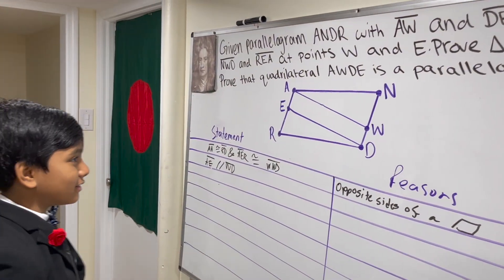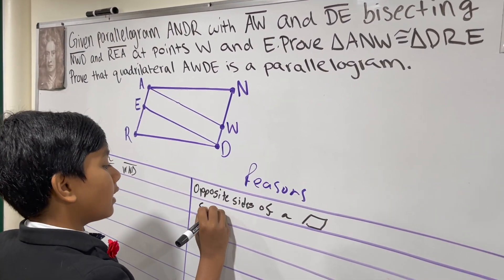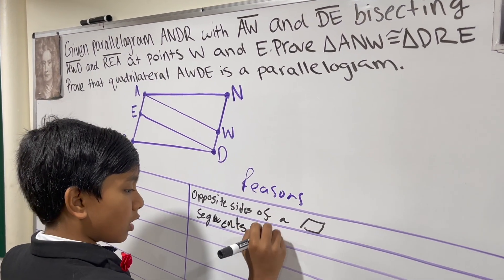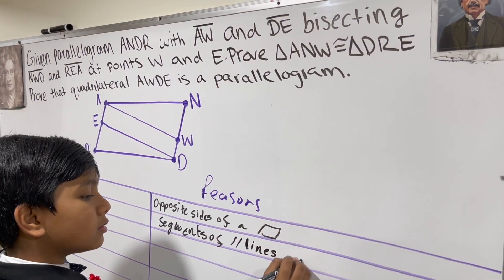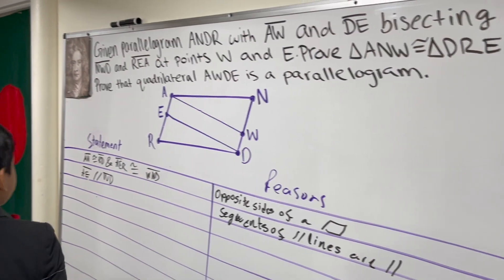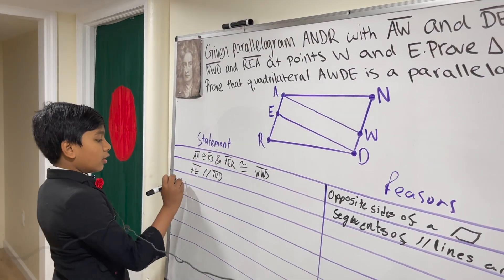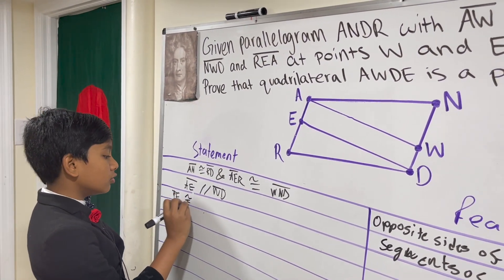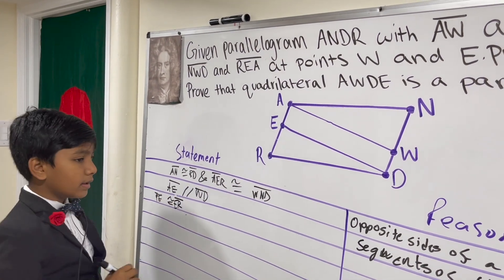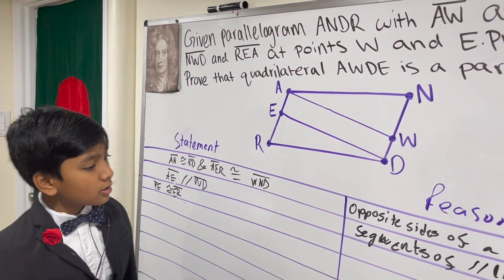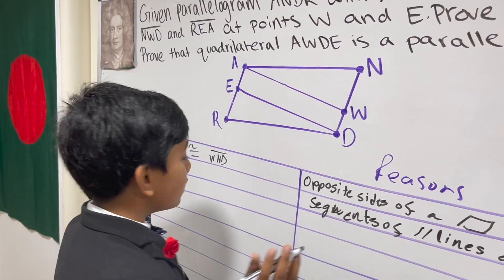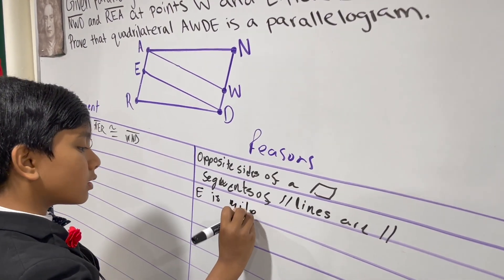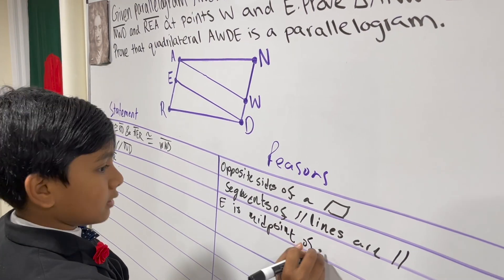Anyway, segments of parallel lines, like ND and AR, are parallel. Alright, now we also have to realize that AE must be congruent to ER. And why is that, little boys and girls? Okay, I'm gonna stop saying that, it's creepy. Well, that's because E is the midpoint of AR.